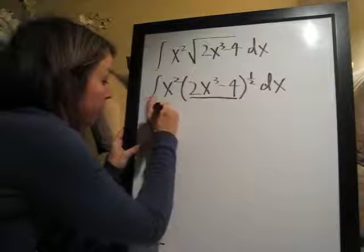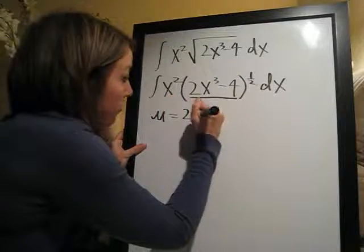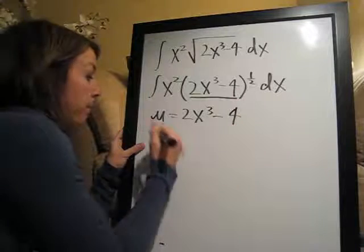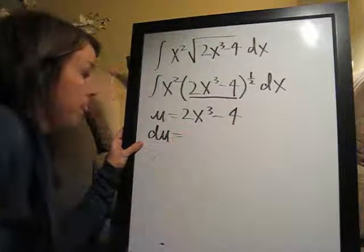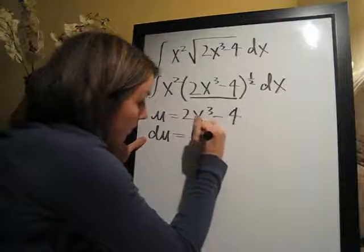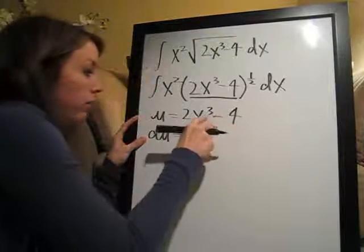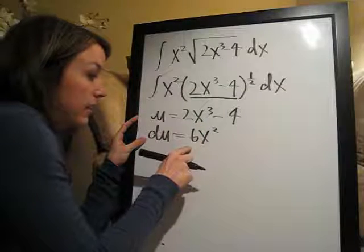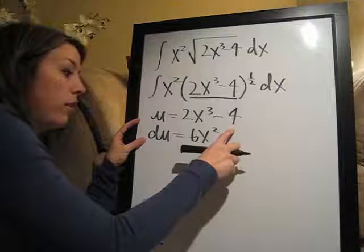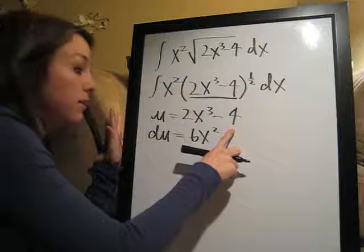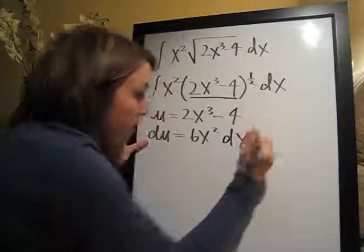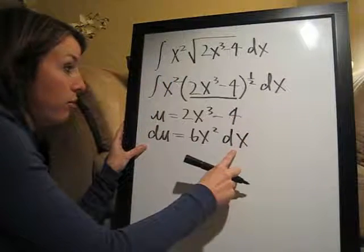We'll say u is 2x to the third minus 4. Then taking the derivative of u here, du is 6x squared, multiplying 3 by 2 to get 6, and then subtracting 1 from the exponent, 6x squared. And of course the derivative of 4 or any constant is 0. So here's our derivative. And then always, always, always add dx so that we can solve for dx.